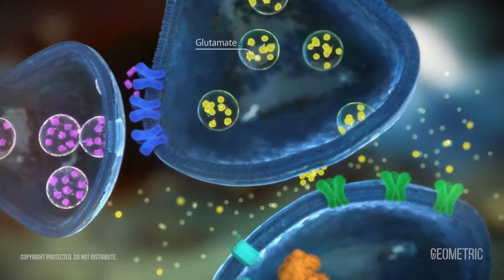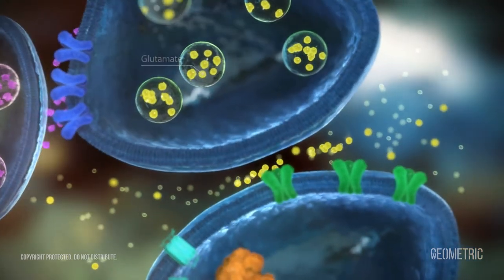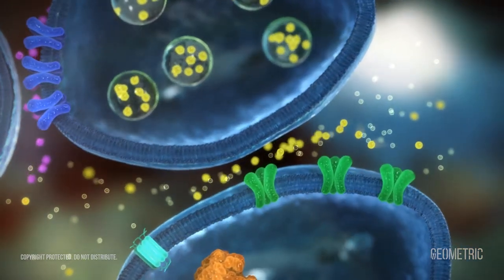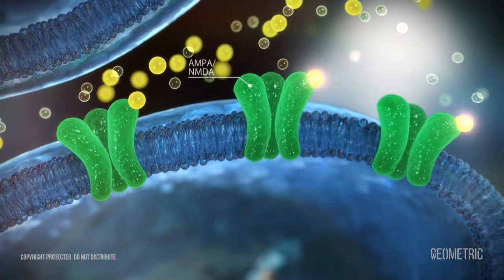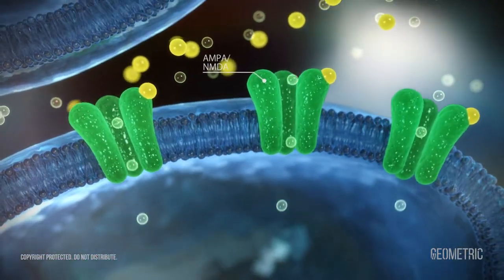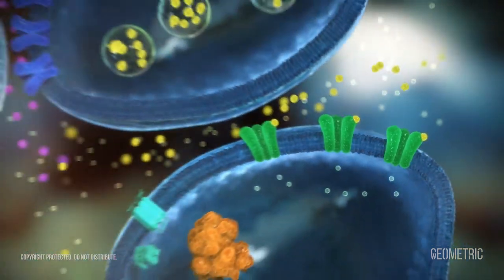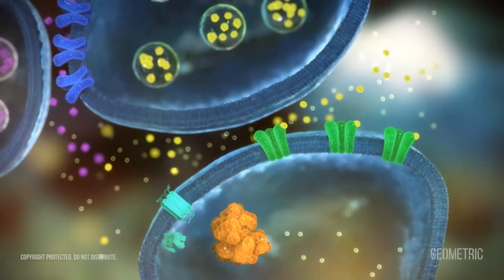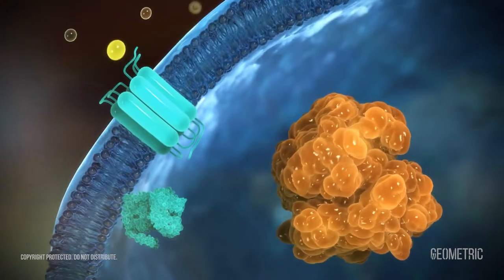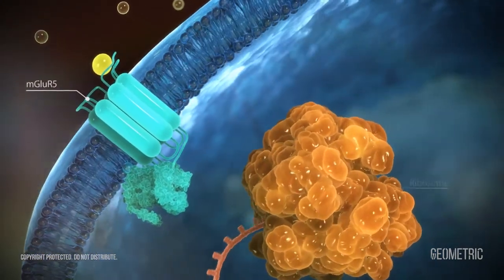Glutamate is the main excitatory neurotransmitter in the brain and it activates different types of receptors. The NMDA and AMPA receptors can be signals that rapidly change the activity of the post-synaptic neuron. The mGlu-R5 receptor stimulates protein synthesis.